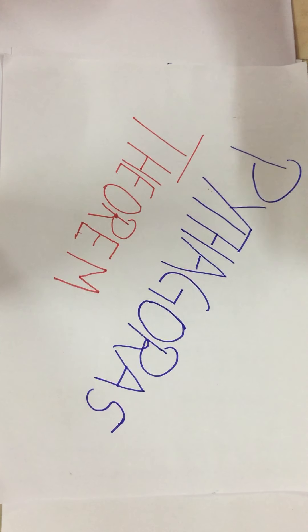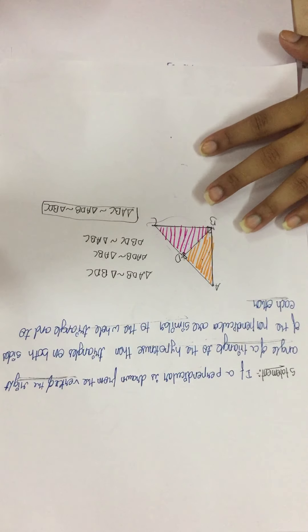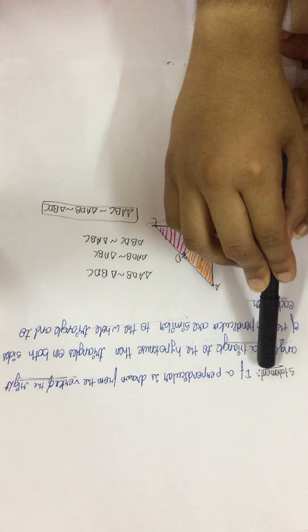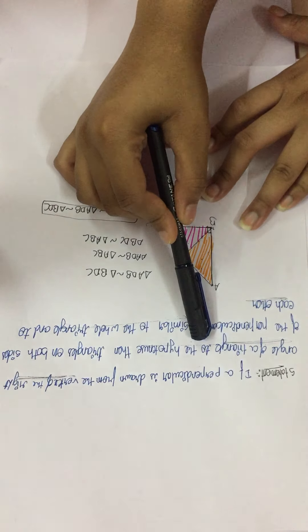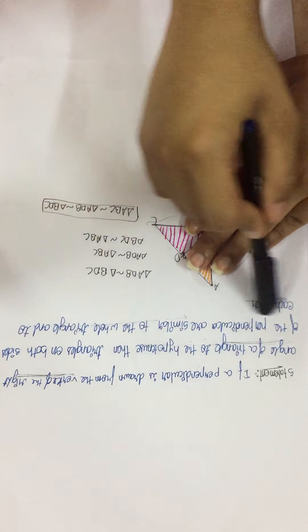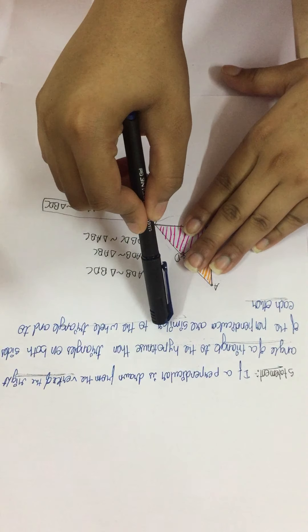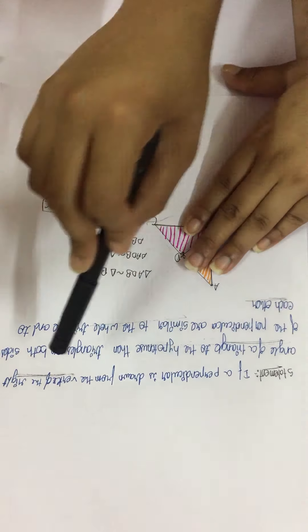This theorem is very small and we will not prove it, but we need to understand it. This theorem states that if a perpendicular is drawn from the vertex of a right-angled triangle onto the hypotenuse, then the triangles on both sides of the perpendicular are similar to the whole triangle and to each other.